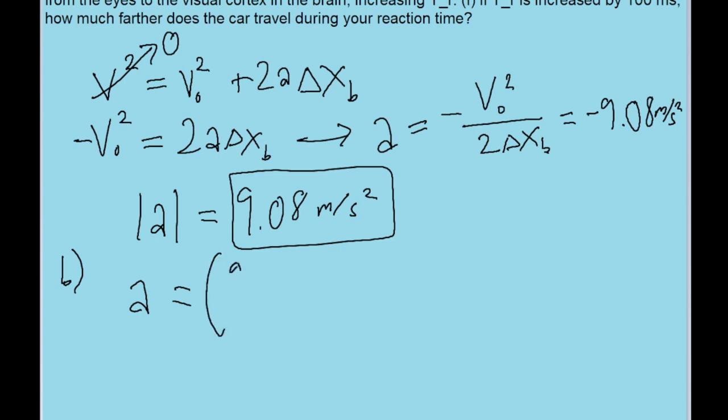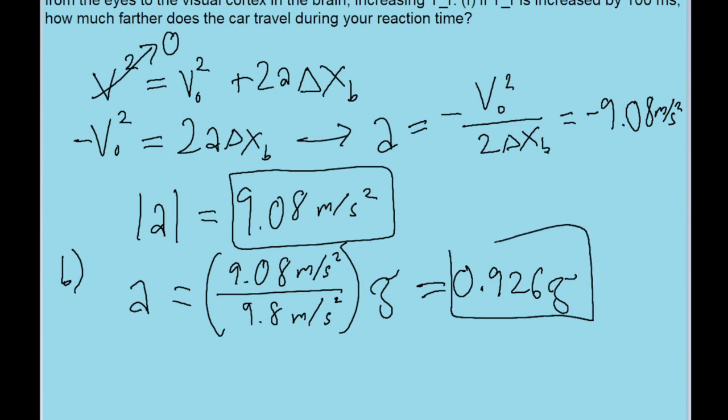So we would solve this by taking 9.08 meters per second squared and then dividing it by 9.8 meters per second squared. Kind of a coincidence that the values look so similar. And then we find a ratio of about 0.926 times g. So that is our answer to part B.